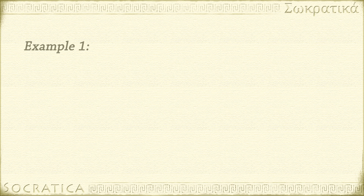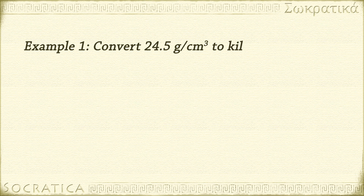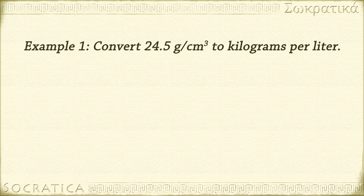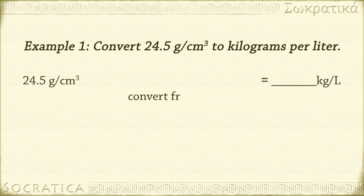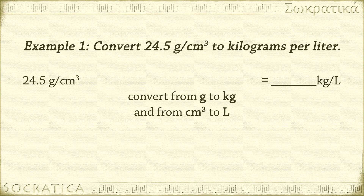Here's our first example: convert 24.5 grams per centimeters cubed to kilograms per liter. Remember, put what you know on the left and what you want to end up with on the right. Leave lots of room for your work. 24.5 grams per centimeters cubed on the left equals some number of kilograms per liter on the right. We know we want to go from grams to kilograms, and from centimeters cubed to liters. We can look up those conversion factors and then we'll have to think about the right way to use them.